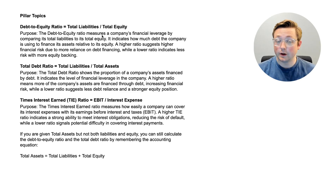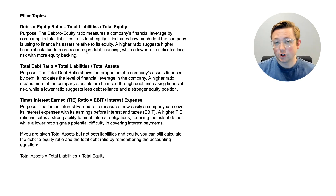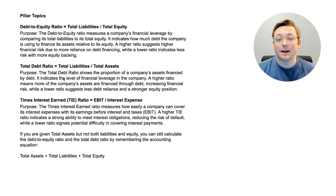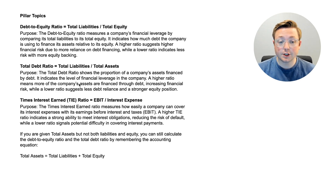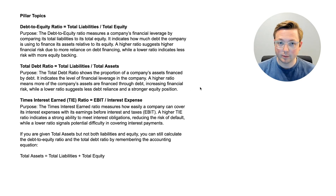The total debt ratio is very similar, but instead of dividing total liabilities by total equity, you divide total liabilities by total assets. It shows the proportion of a company's assets financed by debt — not comparing debt to equity, but showing how much of assets are financed specifically by debt. A higher ratio means more assets are financed through debt, increasing financial risk, while a lower ratio suggests less debt reliance and a stronger equity position.